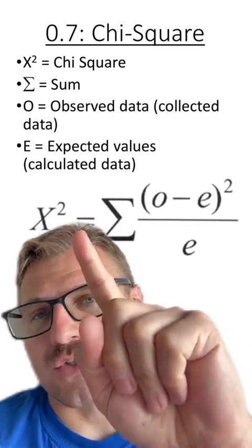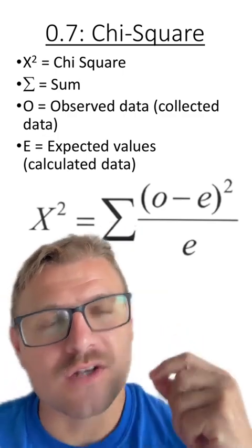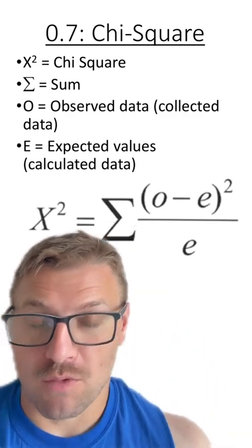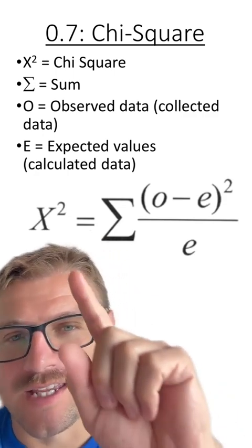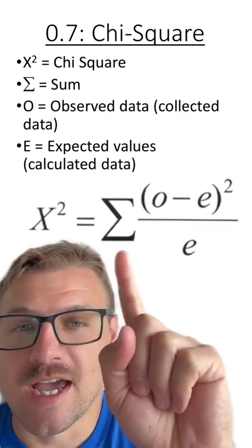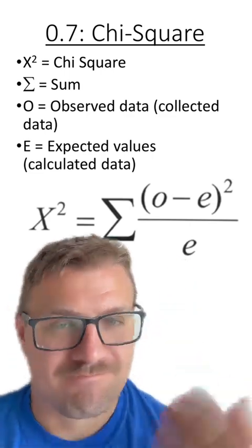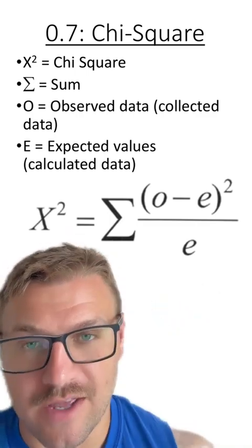One of the most important parts of this equation that students need to understand is that this x-squared does not equal the p-value. This x-squared just represents the chi-square, what we're going to calculate. The second biggest mistake students make is thinking that this x-squared means that you have to square root this side as well as square root this side. That's not the case. X-squared literally means the chi-square value.